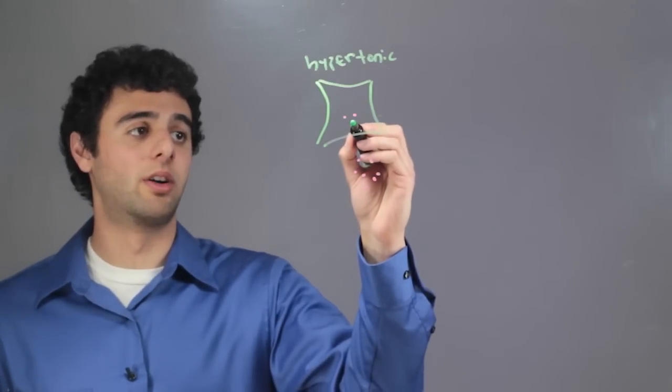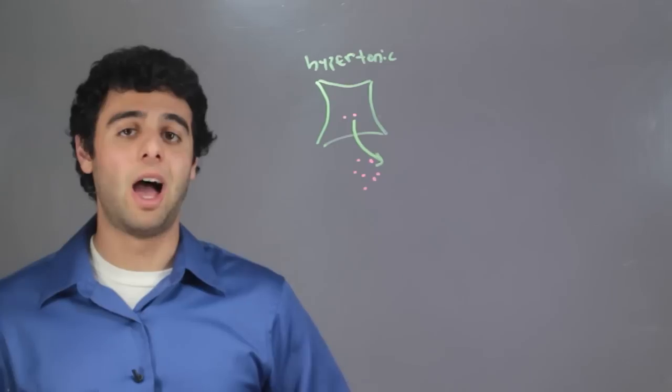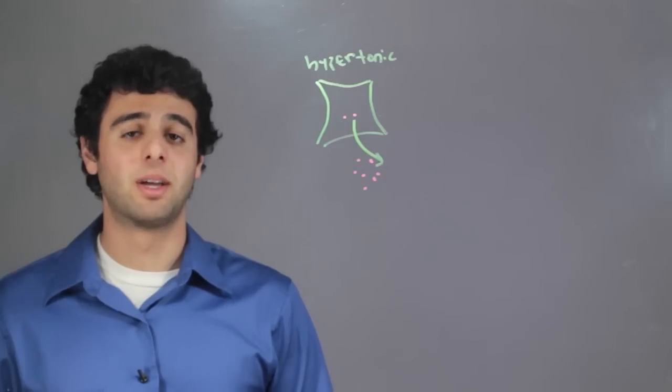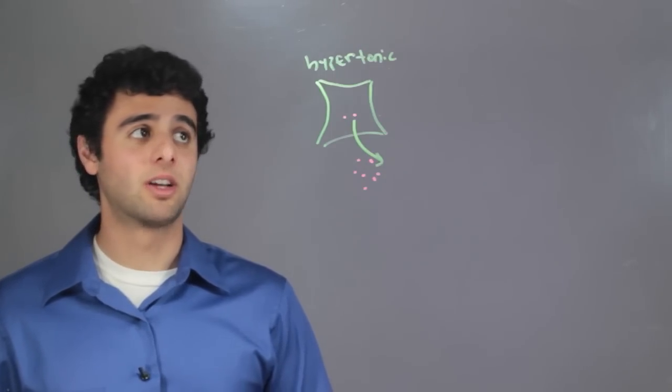This makes the water go out of the cell. With the water leaving the cell, it makes the pressure inside much lower, thus we have a hypertonic cell.